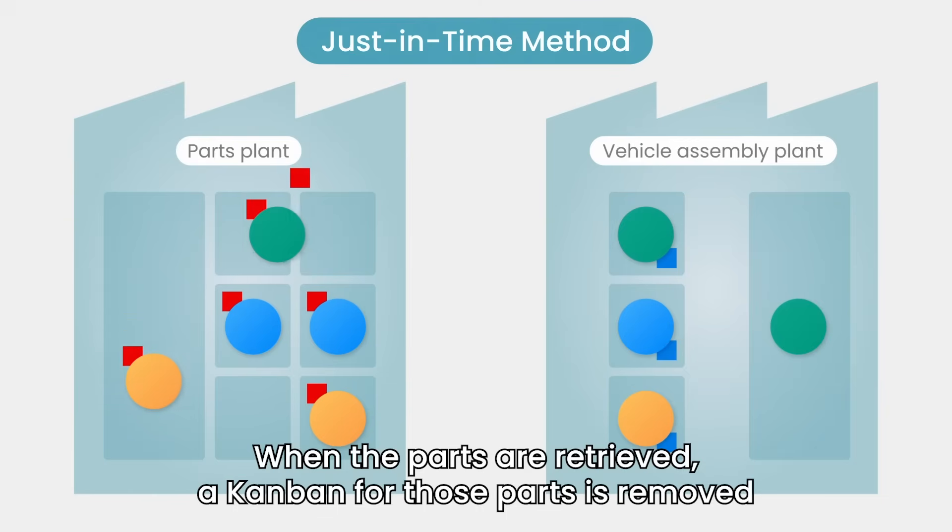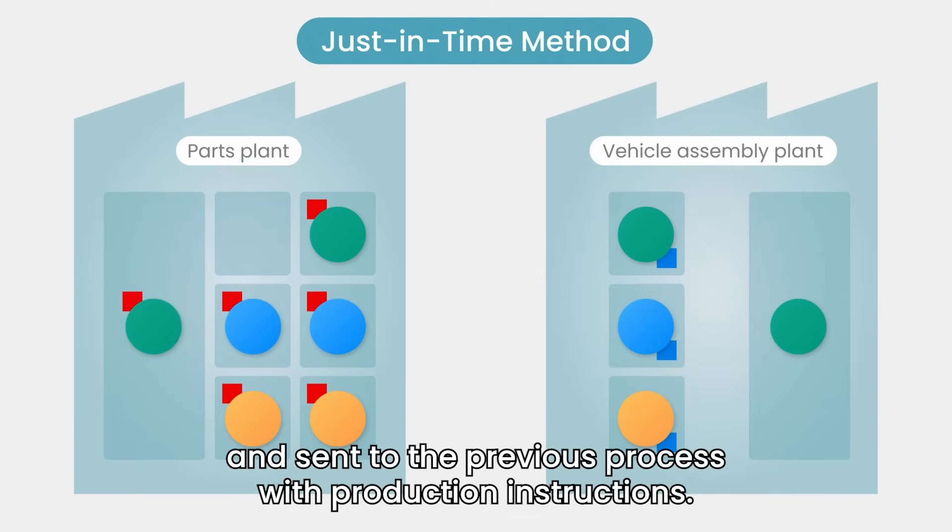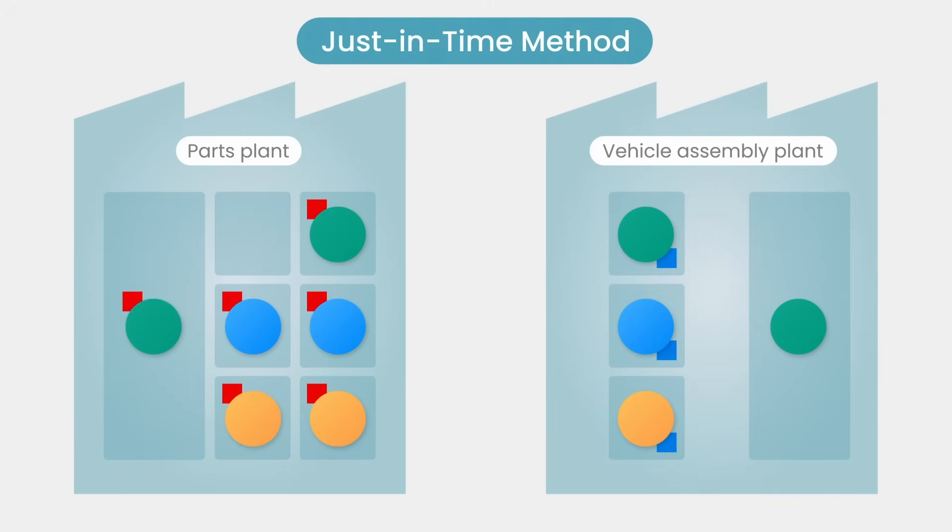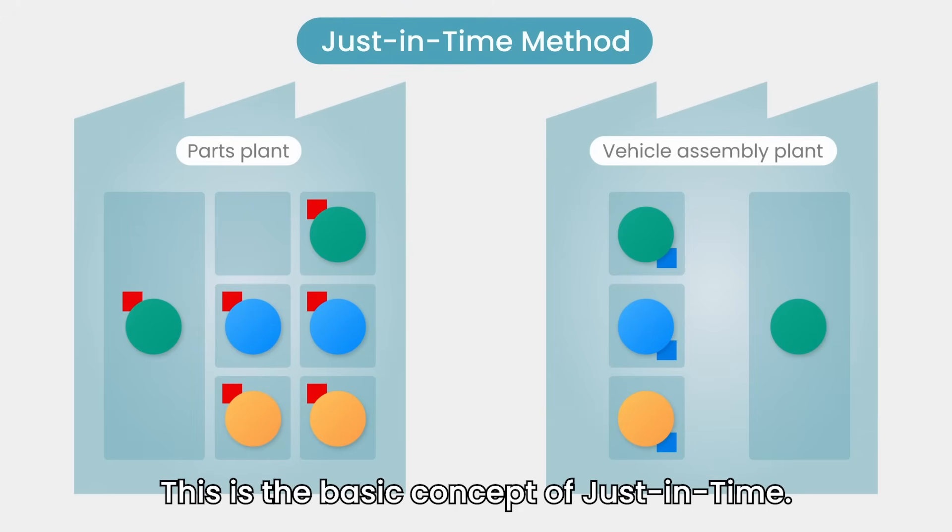When the parts are retrieved, a Kanban for those parts is removed and sent to the previous process with production instructions. This is the basic concept of just-in-time.